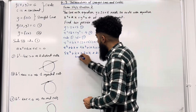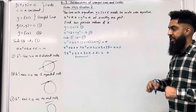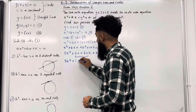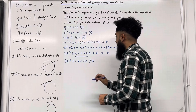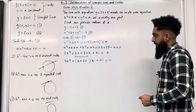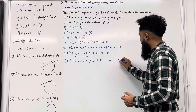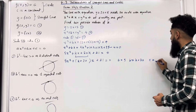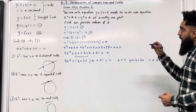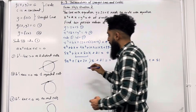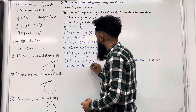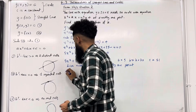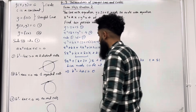Factorising the x terms to write in the form Ax squared plus Bx plus C equals 0: 5x squared plus (k plus 20)x plus 21 equals 0. So A equals 5, B equals k plus 20, and C equals 21. The question states the line meets the circle at exactly one point, implying one repeated root. Therefore B squared minus 4AC equals 0, giving (k plus 20) squared minus 4 times 5 times 21 equals 0.